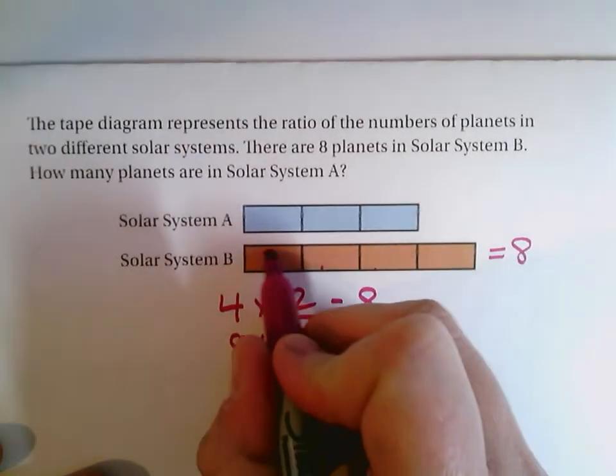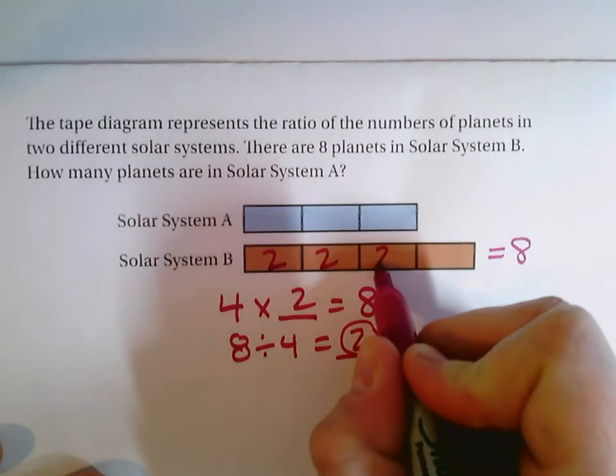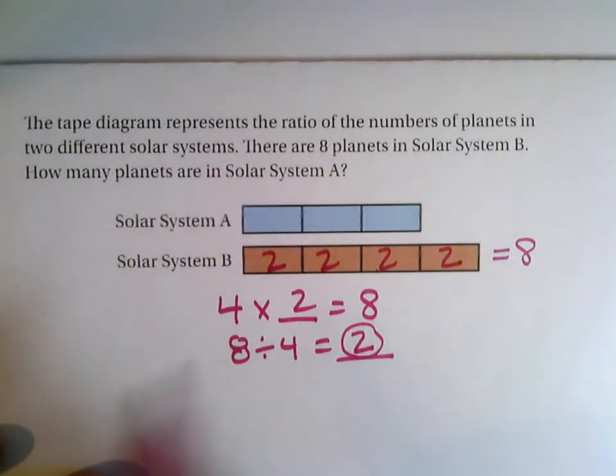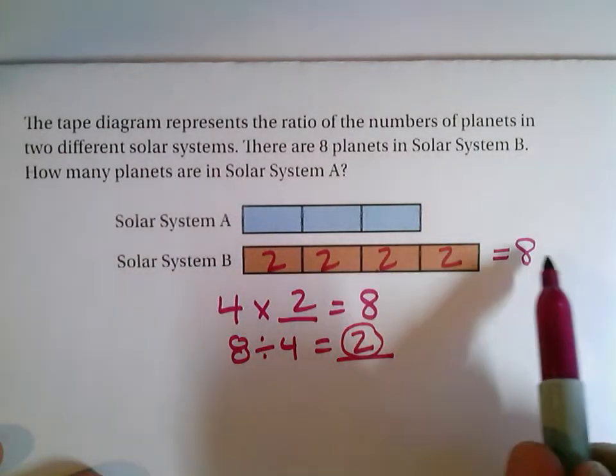So I know that each of these is worth two. Each part is two. And I can double check two, four, six, eight. Yeah, that equals eight.